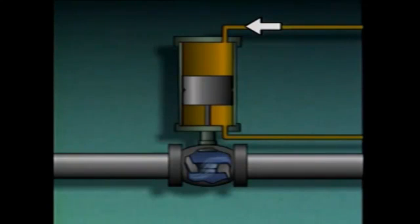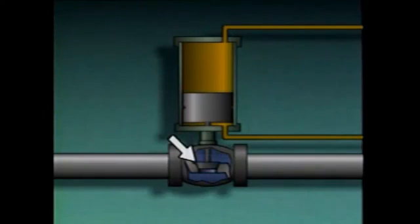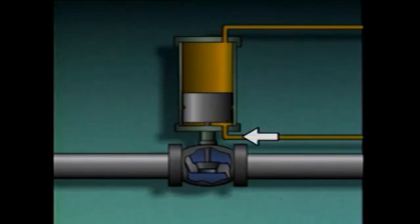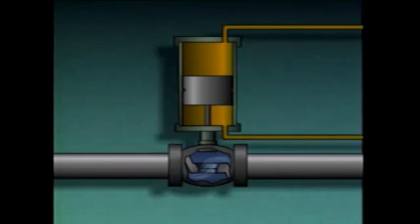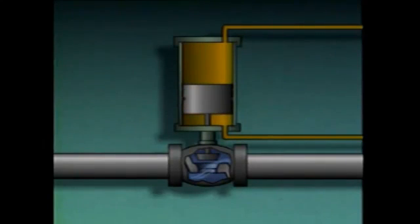If fluid enters through the top port, it pushes the piston and piston rod down to close the valve, and an equal volume of fluid is bled through the lower port. When fluid is directed into the lower port, it causes the piston and piston rod to move up, opening the valve, while an equal volume of fluid flows out of the upper port. When fluid flow is stopped, fluid is trapped on both sides of the piston, holding it in place. The piston can be positioned anywhere by controlling the amount of fluid entering one port and bled from the other.